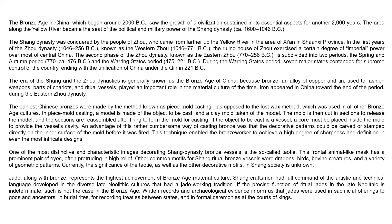Let's take a look at the first RC — 'The Bronze Age in China.' The Bronze Age, which began around 2000 BC, saw the growth of civilization sustained for another 2000 years. The area around the Yellow River became the seat of political and military power of the Shang dynasty. The Shang dynasty was conquered by the people of Zhou, who came from further up the Yellow River. The Zhou dynasty had two phases: Western Zhou, then Eastern Zhou, divided into Spring-Autumn and Warring States periods. When you come across a lot of information like this, there's no need to try to remember all the details as you read — just understand chronologically how things unfolded and move ahead.